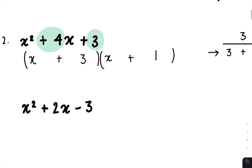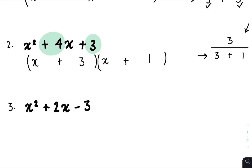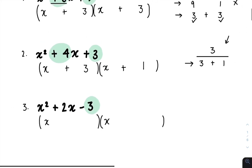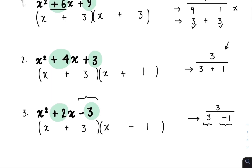Here we have x squared plus 2x minus 3. Your first step, again, is to open up two brackets, place an x here and here. Then look at the last number — for now, ignore the sign, we'll deal with it later. Using the 3, just list the factors, which is just 3 and 1. You then look at this number, which is a plus 2. We need to use 3 and 1 to make plus 2, so we do 3 minus 1. You put a plus 3 here and a minus 1 here. Note: 3 multiplied by minus 1 gives us the minus 3 required, and 3 minus 1 gives us the plus 2 required.